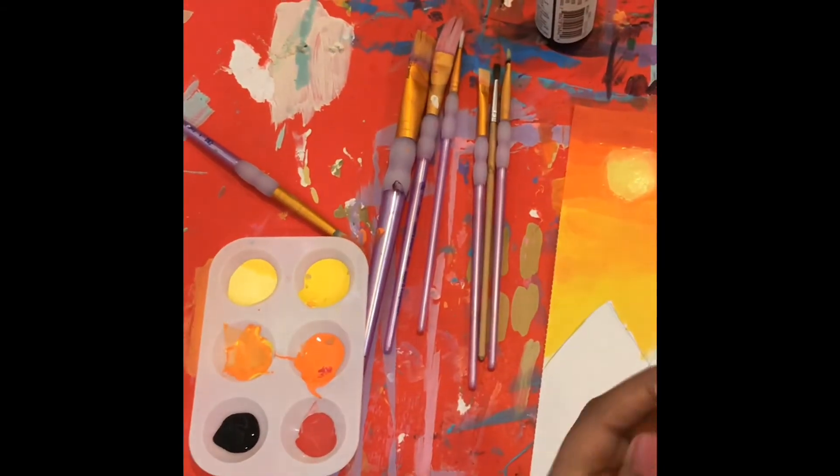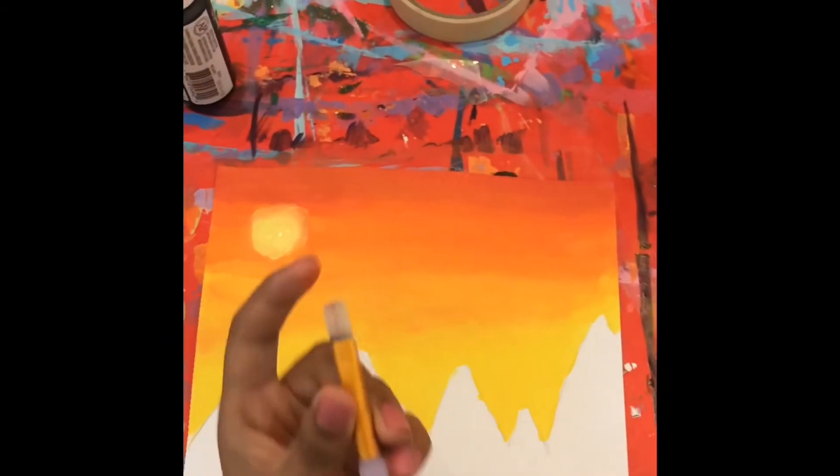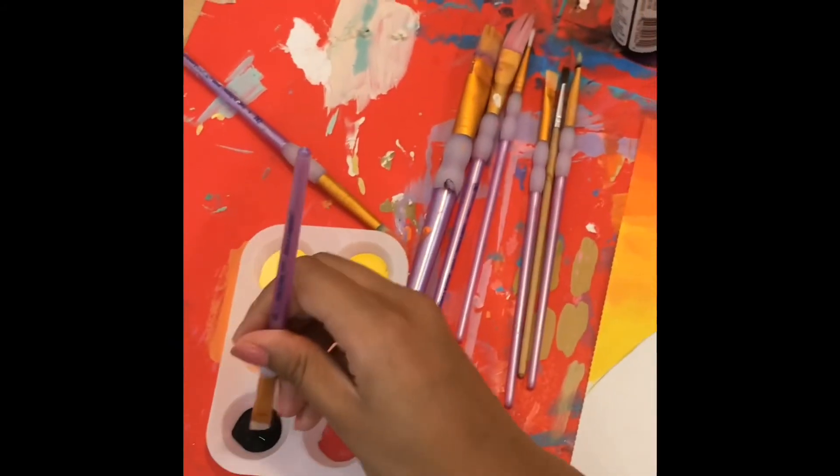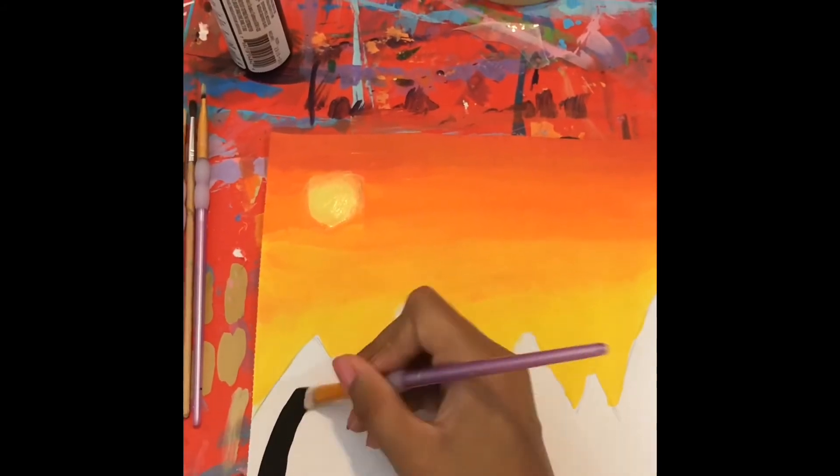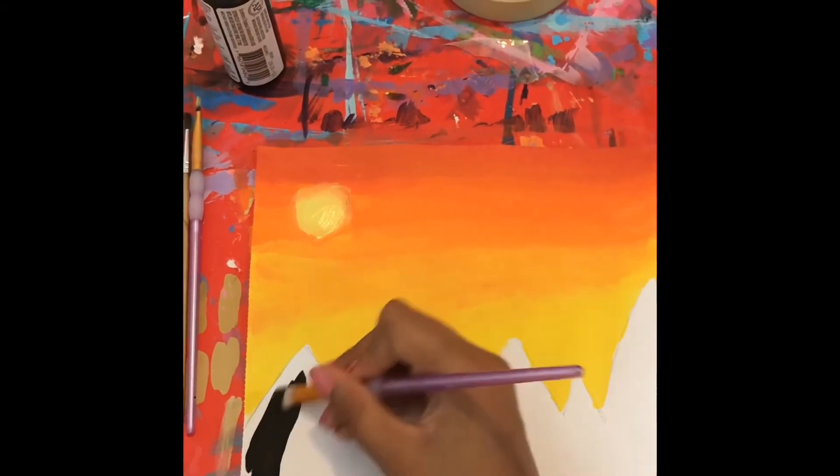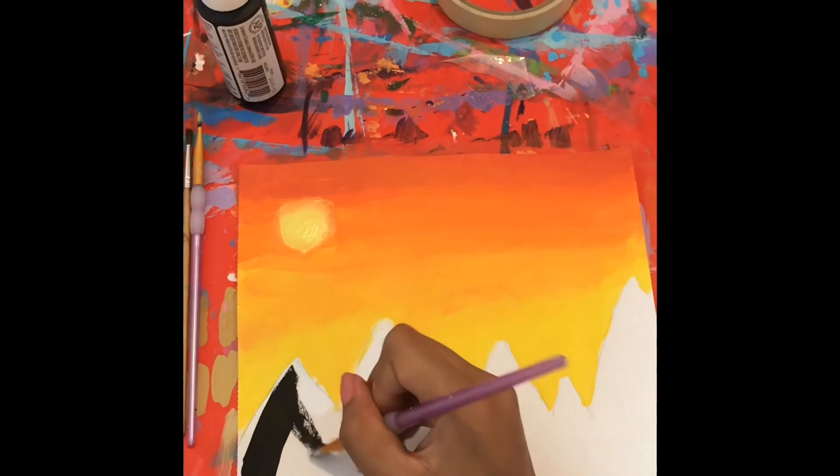Then you want to take a medium straight brush, take your black paint, and paint in the mountains. This is kind of like a silhouette of a mountain during the daytime.